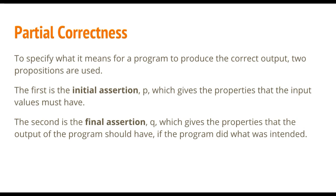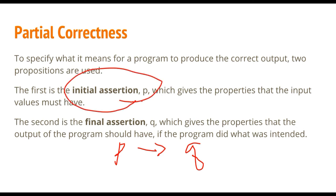This looks like the implication P implying Q, only that we have different terms — initial assertion. So, given that the initial assertion is true, does it follow that the final assertion is satisfied? If so, we can conclude that it's partially correct.